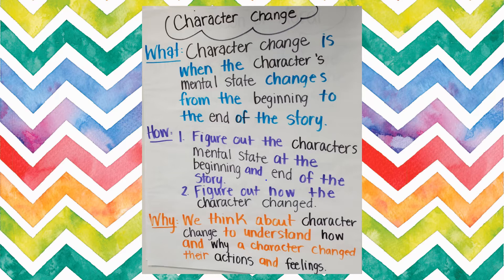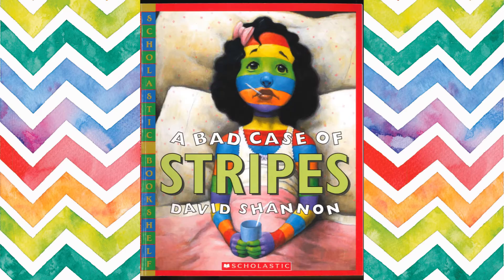Oftentimes, a character does not think or feel the same way throughout a whole story. This is called character change. Character change is when the character's mental state changes from the beginning to the end of the story. Today we're going to be reading A Bad Case of Stripes, and as we read, we will identify how our character changes from the beginning to the end of the story.